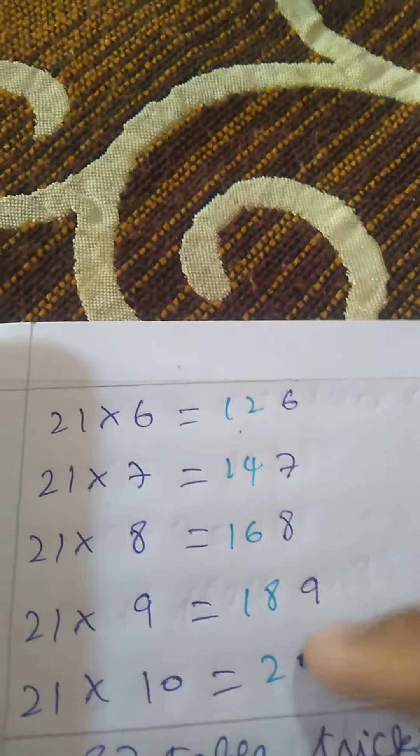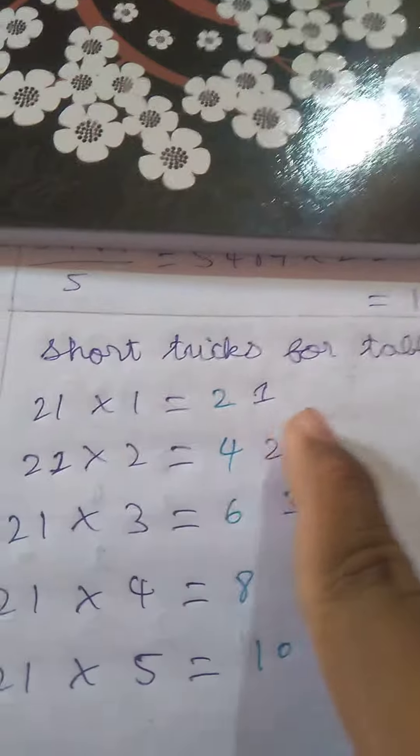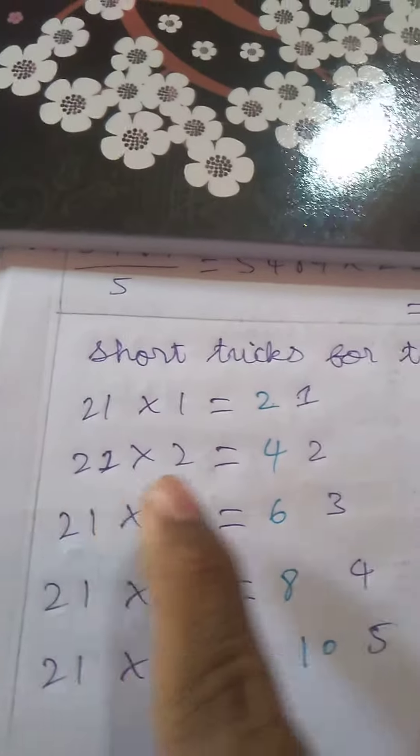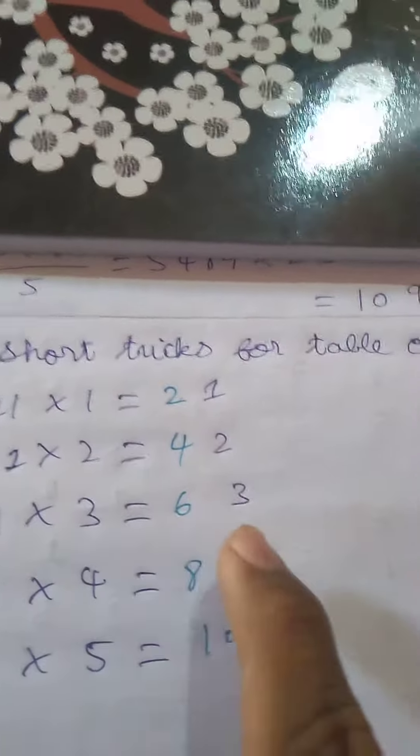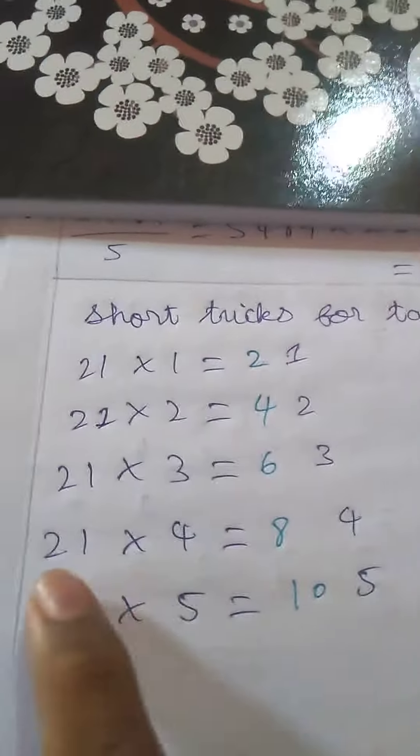What do you do? 1 table: 1×1=1, 2×1=2, 3×1=3, 4×1=4, 5×1=5, 6×1=6, 7×1=7, 8×1=8, 9×1=9, 10×1=10.